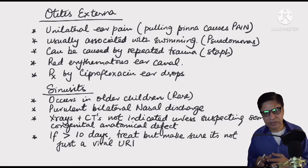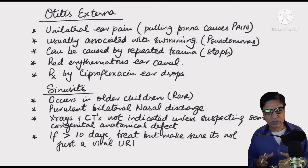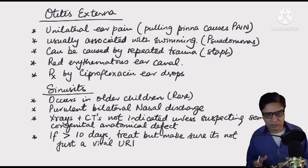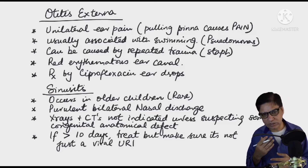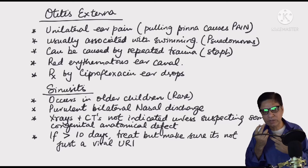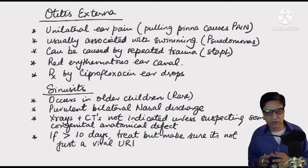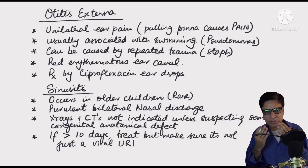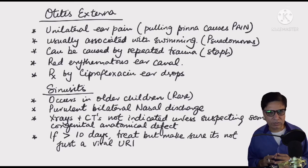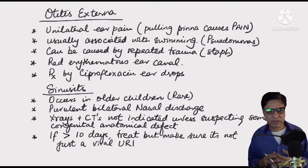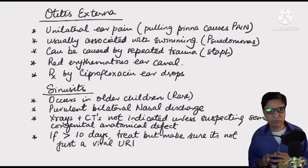It would usually be teenagers or adolescents who present with sinusitis. Sinusitis is infection of the sinuses surrounding the nose — maxillary, ethmoid, sphenoid, or frontal. Most commonly the maxillary or frontal sinuses are infected. These kids usually have pre-existing problems such as a deviated septum or anatomical defects in their facial bones that predispose them to sinusitis.